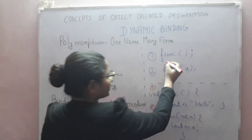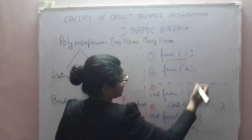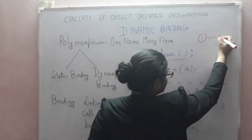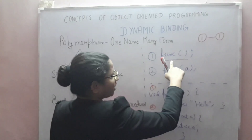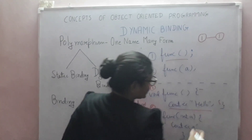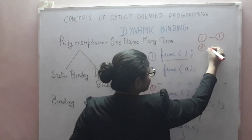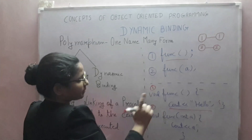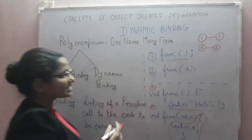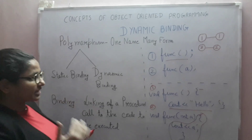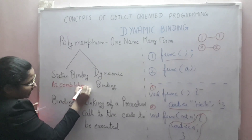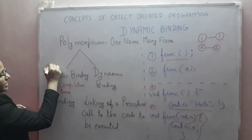Linking of a procedure call to the code to be executed means the first function call is linked with the first function definition — whenever you call funk, you execute that line of code. The second function call is linked with the second function definition — whenever you call funk(a), you execute that line of code. When this linking is done at compilation time, this is known as static binding or early binding.